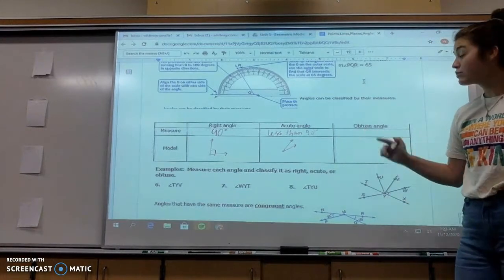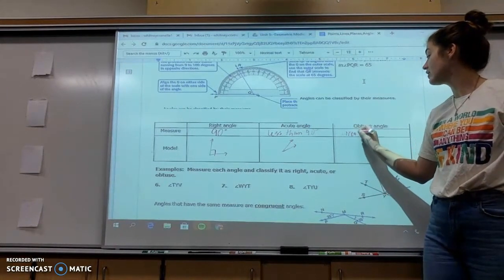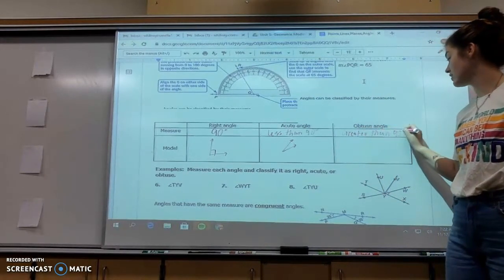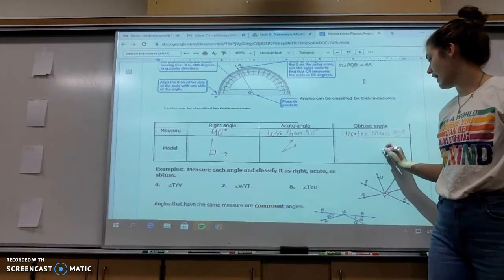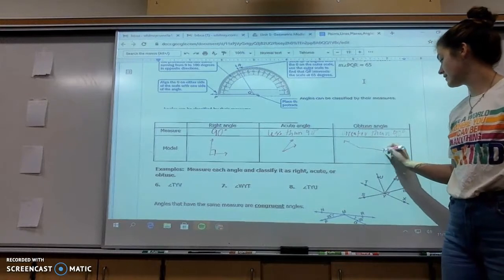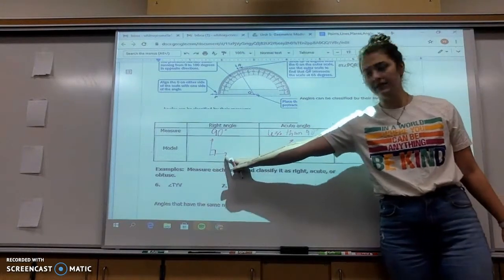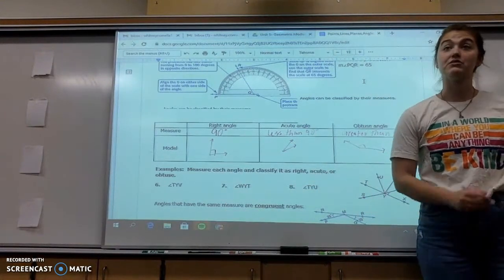Last one is obtuse. This is anything greater than 90 degrees, meaning something like that is an obtuse angle. That's obviously not a right angle. It's bigger than a right angle, so it's obtuse.